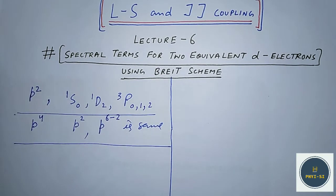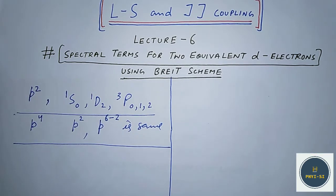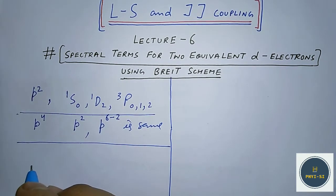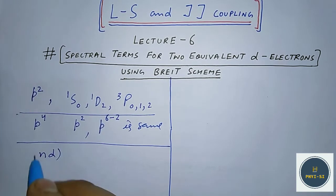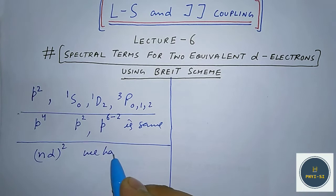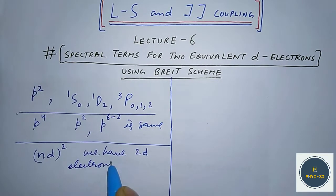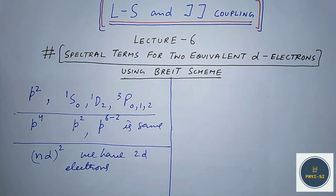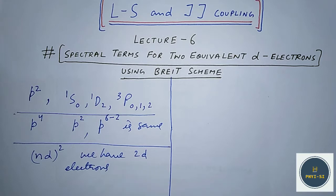Now, in this lecture we will find the spectral terms for equivalent d-electrons, and we will again apply the Breit scheme. Let us assume the nd² configuration. We have two d-electrons, and using the Breit scheme we will find the capital ML values by combining the actual l values, and then we will find the terms for two equivalent d-electrons.